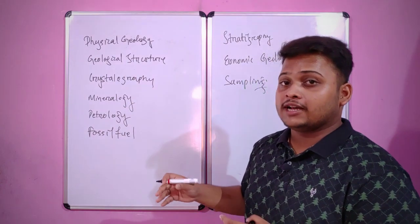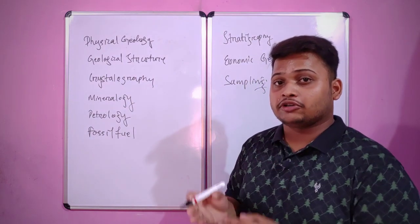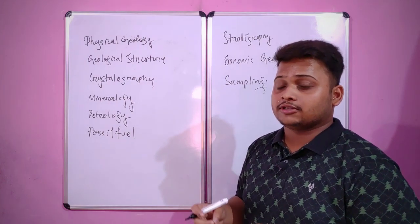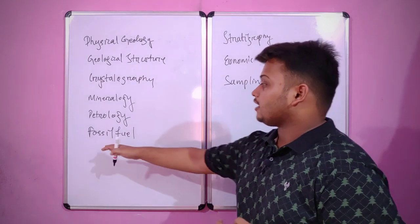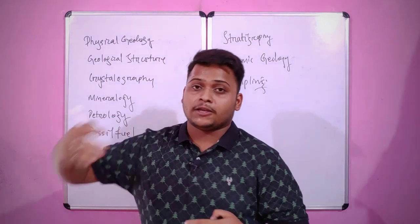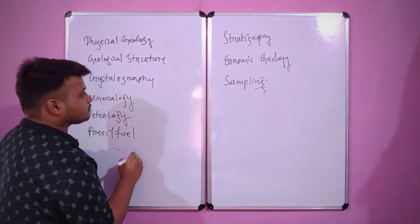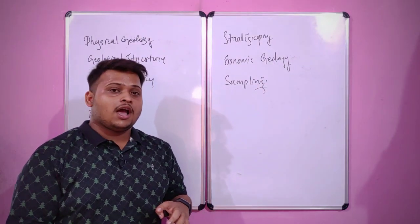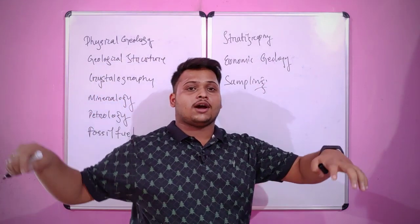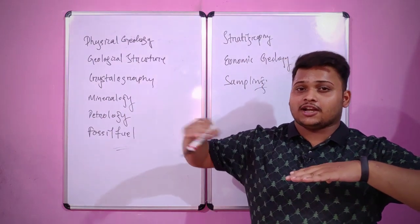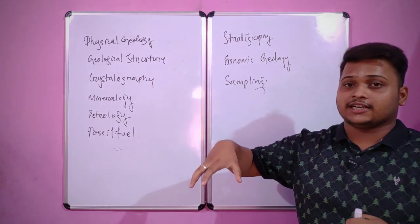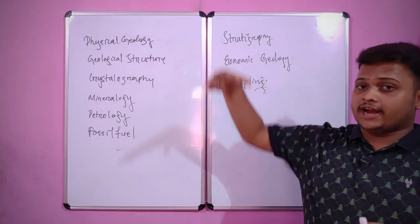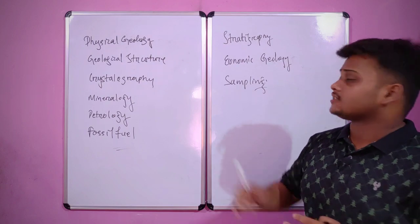Next we come to fossil fuels. Fuels consumed by human beings — like petroleum products, coal, kerosene, diesel, and any substances used as fuel — are covered by fossil fuels. Also about stratigraphy, which gives information about correlations: how the surfaces found on the earth are related to each other, how seams relate seam to seam, and contour lines which represent height or depth. All of these things are criteria given by stratigraphy.